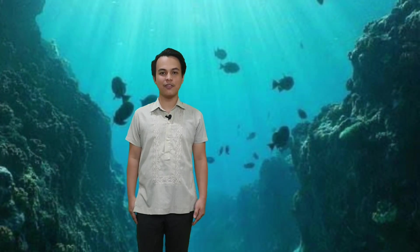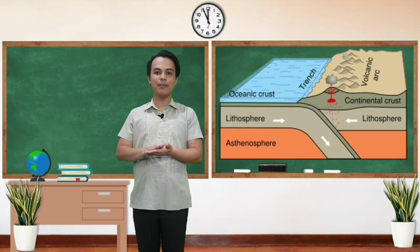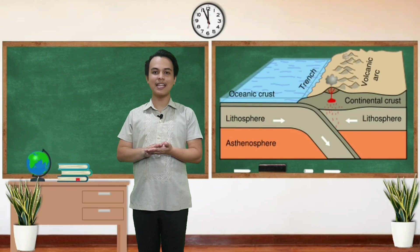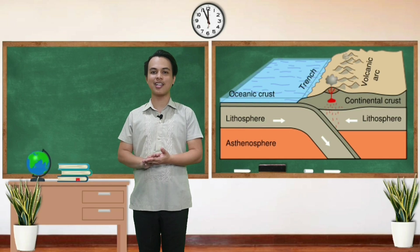Sa kabilang banda, ang oceanic crust naman ay may kapal na 7 to 10 kilometers. Oceanic crust is found under ocean floors and is made up of dense rocks such as basalt. Ang crust ay mayroong dalawang layers. Ang upper layer which is composed of granite na makikita lamang sa continental crust. At ang sumunod na layer naman ay gawa sa basalt na makikita sa oceanic crust at continental crust.